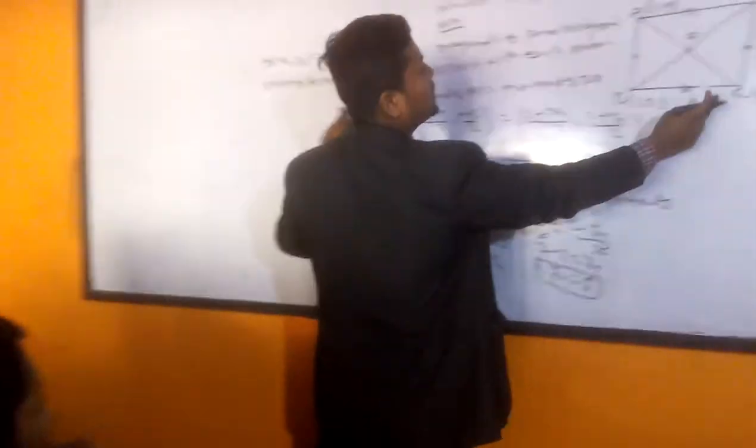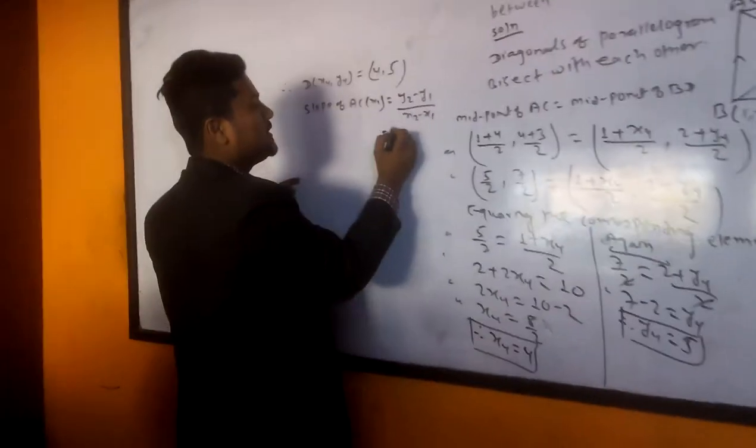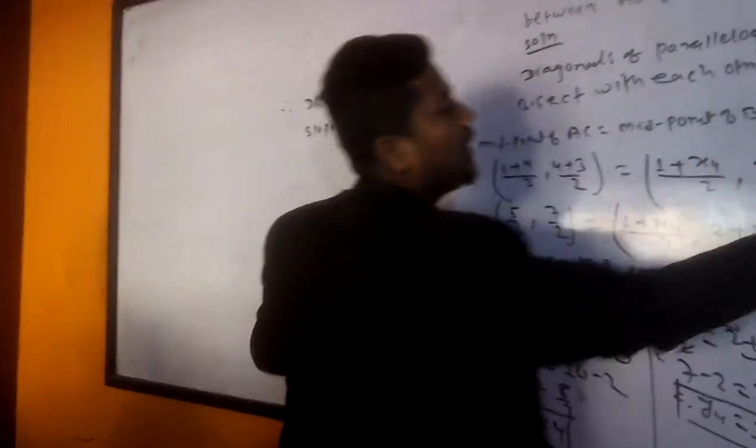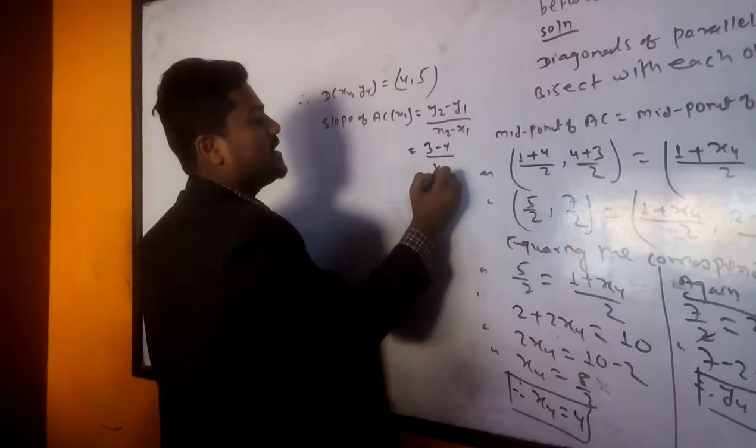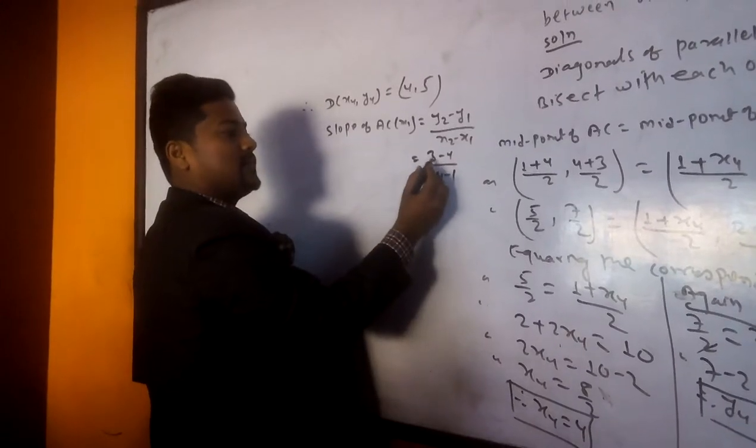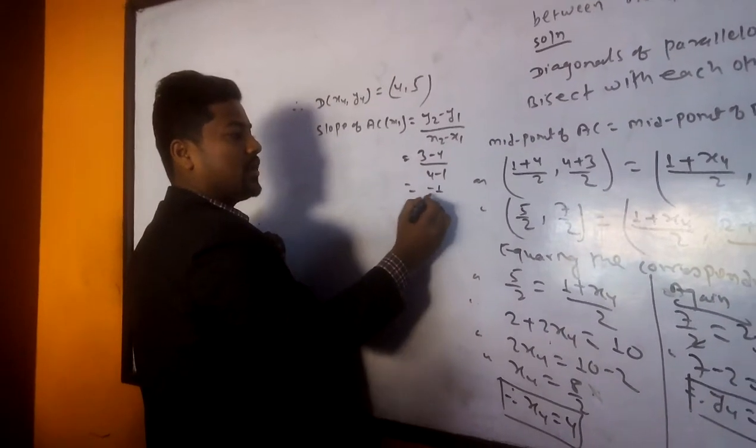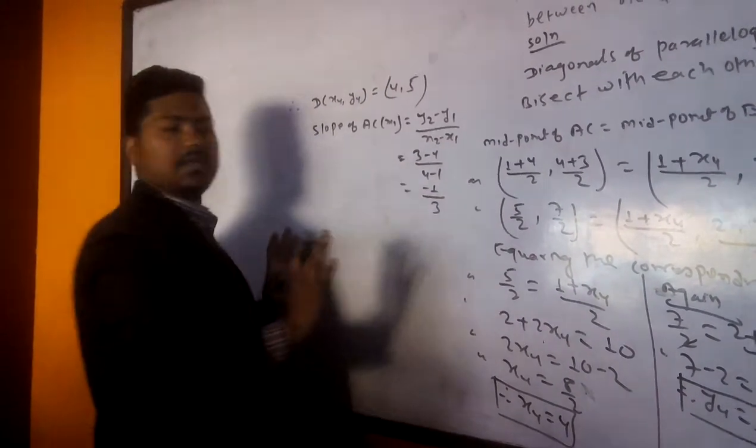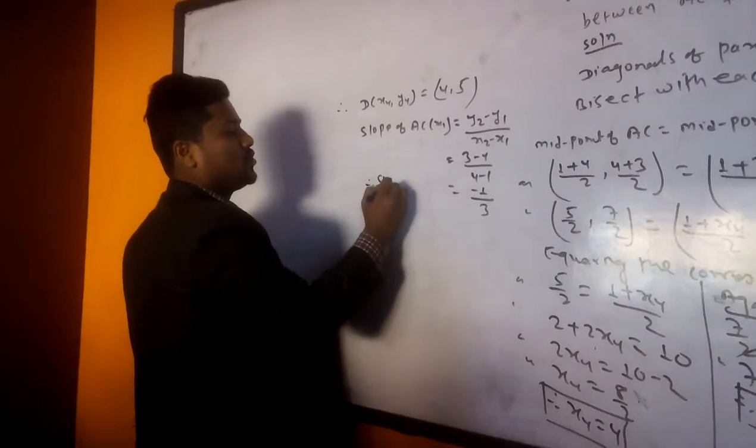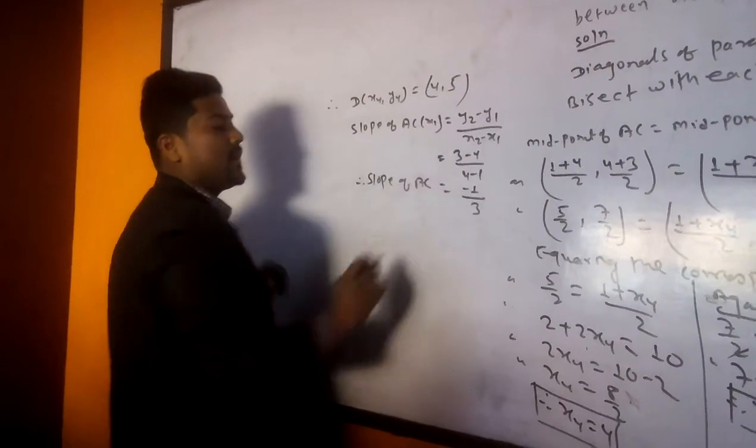Y2 minus Y1 upon X2 minus X1. So now here is AC. Y2 means what here? 3. 3 minus 4 upon X2 minus X1, 4 minus 1. So what comes here? Minus 1 upon 3. In this way we got slope of AC.